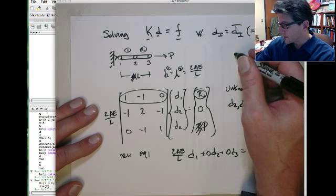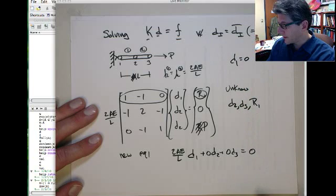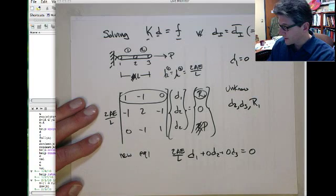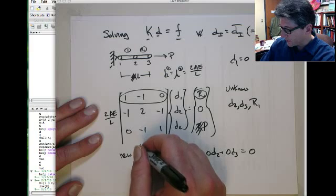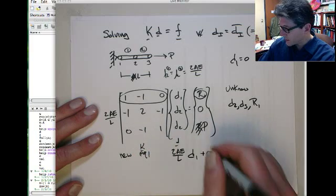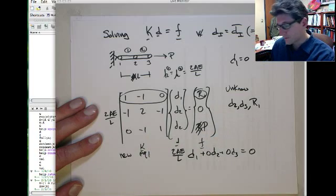Because here we know that D1 equals 0. I put the 2AE on L just because it's out here. So this is the original stiffness matrix, here's the D matrix, and then here's the original force.